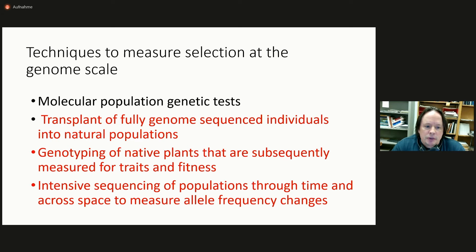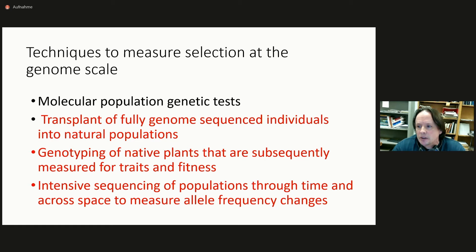The first methodology involves a transplant of fully genome-sequenced individuals into natural populations, where we subsequently follow individuals through their lives and measure traits and fitness. The second methodology starts with the natural population itself, genotyping plants in situ — native plants — and then following them through their lifetimes to measure traits and fitness. Finally, we use the more classical technique of intensive sequencing of populations, both through time and across space, to measure allele frequency changes and corroborate results from the first two methods.